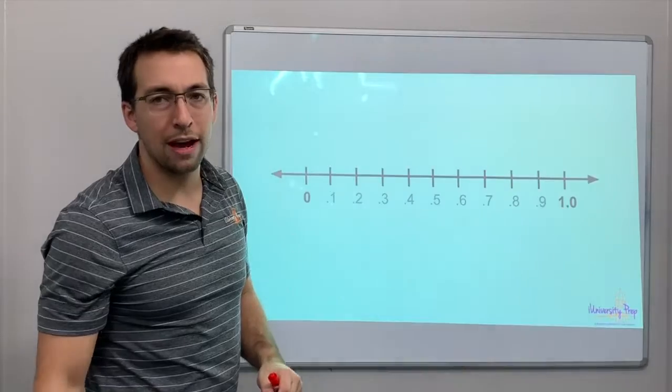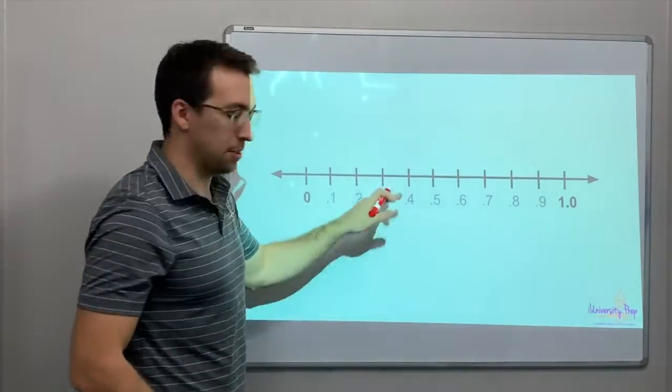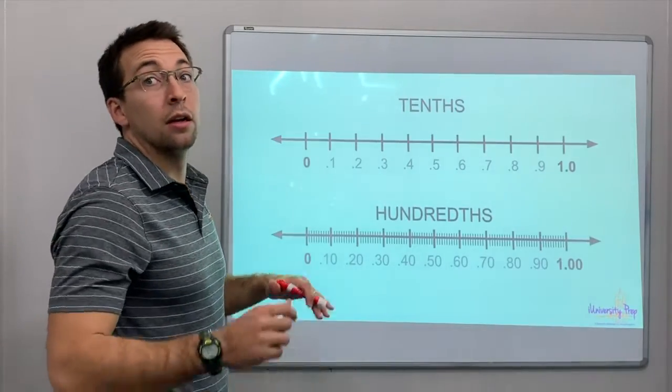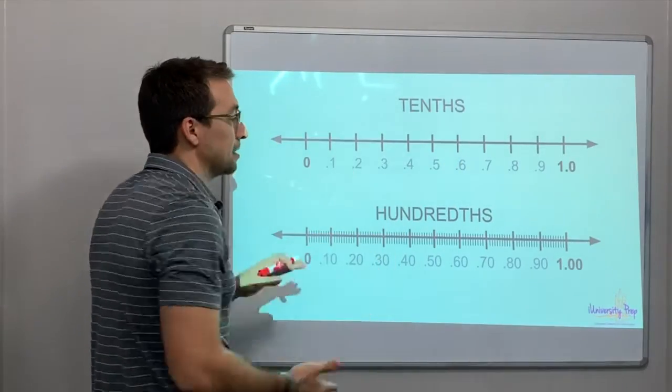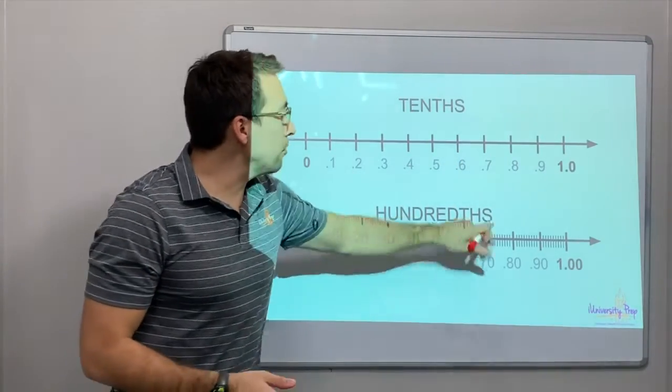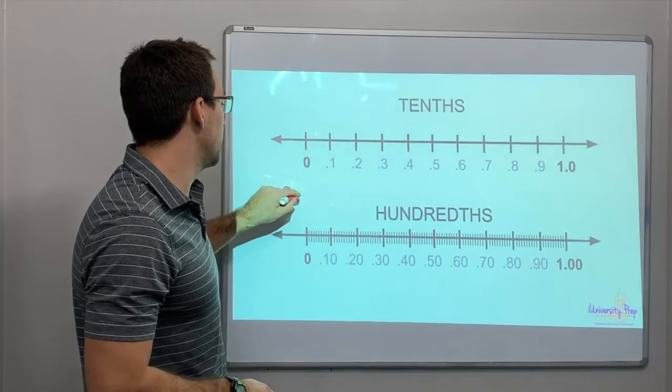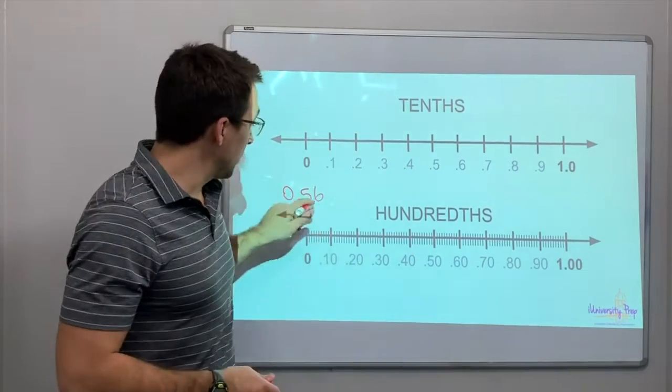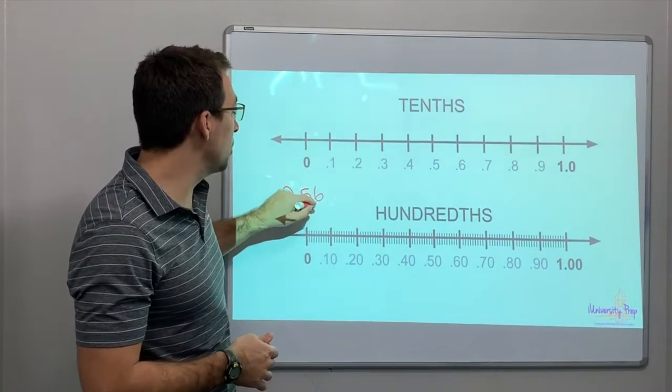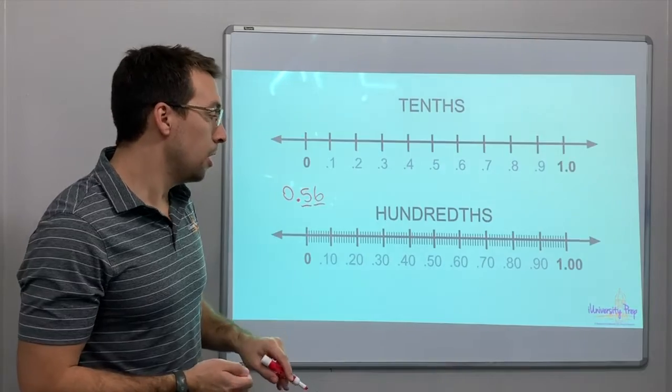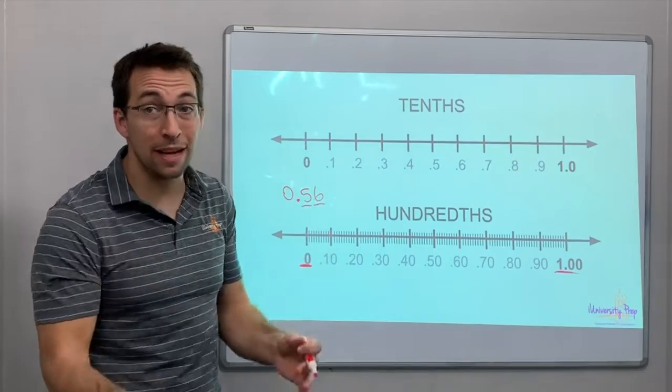So, what does it look like when you have tenths blown up, right? Zero to one, ten spaces. Now, whoa, we have to blow it up, so we're going to add more spaces. If you're dealing with a hundredths place, so let's say we're dealing with zero point fifty-six. Between zero and one, there's a hundred spaces.